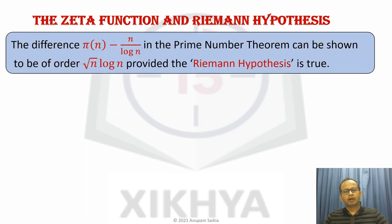And to understand this difference between π(n) and n by log n, which are actually like the prime number theorem. The prime number theorem says that their ratio as n goes to infinity is 1. But what is the difference? This difference can be shown to be of order square root of n times log n, provided a big hypothesis known as Riemann hypothesis is true. The Riemann hypothesis has several other very important consequences.